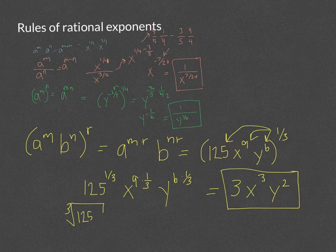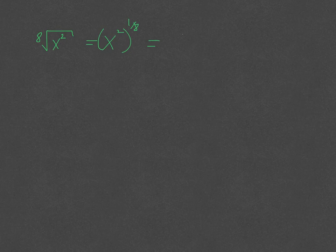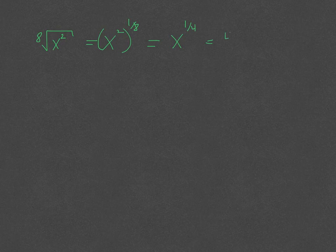Rational exponents work with both variables and constants. To simplify the eighth root of x squared, rewrite the eighth root as the 1/8 power. Distributing: 2 times 1/8 equals 1/4. Rewriting 1/4 as a radical gives the fourth root of x, which is our final answer.